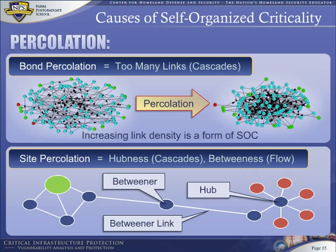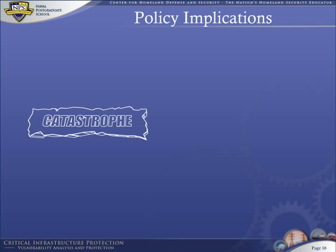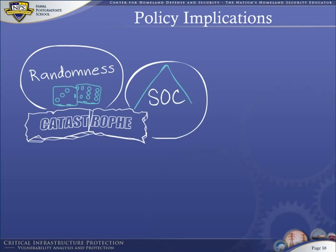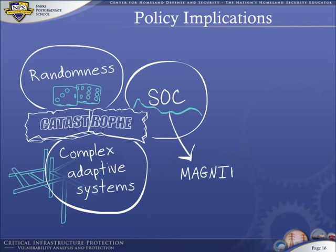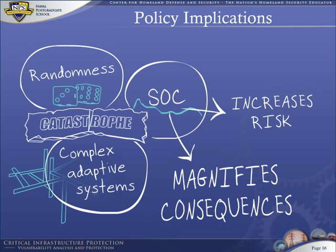Percolation theory explains two forms of SOC and also suggests policy options. The implications for policy are obvious. Catastrophes are caused by a combination of randomness, self-organized criticality, and the structure of complex adaptive systems. Consequences are magnified by SOC. Risk is increased by SOC. SOC is increased by various forms of percolation. These are the elements of catastrophe.